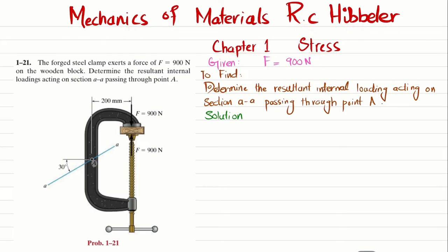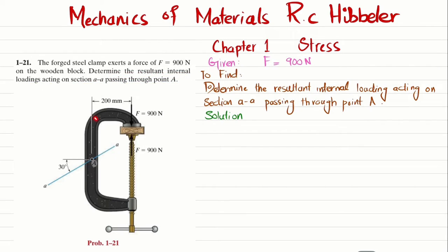The statement of the problem is: the four steel clamp exerts a force of 900 Newton on the wooden block. Determine the resultant internal loading acting on section AA passing through point A. You can see this is a forged steel clamp that exerts 900 Newtons on this wooden block. You have to find the resultant internal loading at section AA passing through point A.